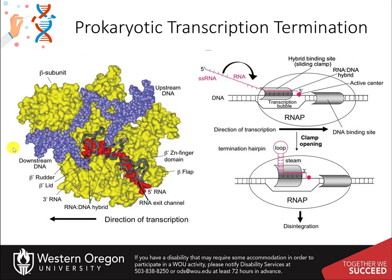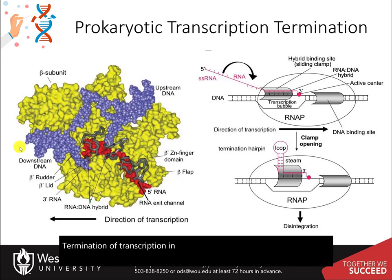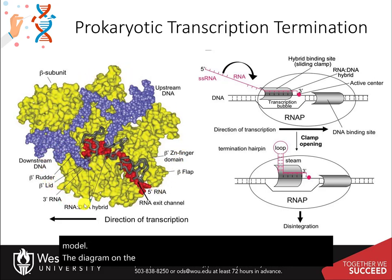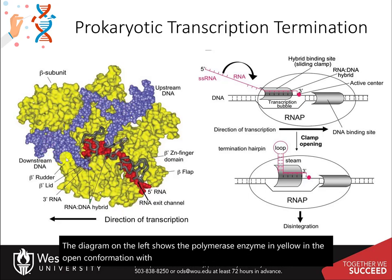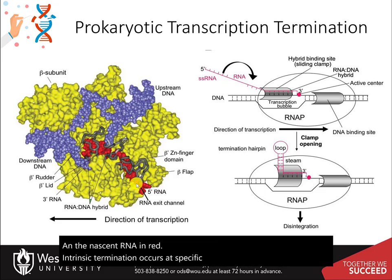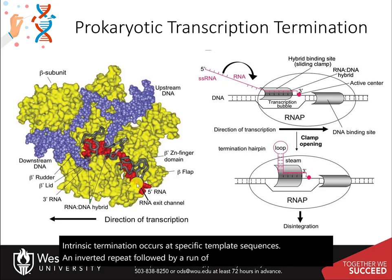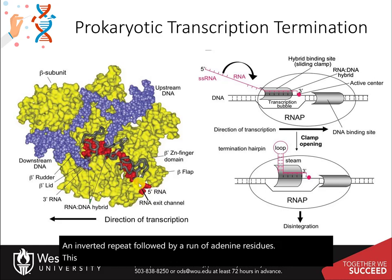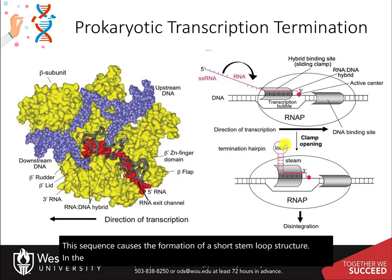Termination of transcription in prokaryotes can occur using an intrinsic model. The diagram on the left shows a polymerase enzyme in yellow in the open conformation with the DNA in blue and the nascent RNA in red. Intrinsic termination occurs at specific template sequences — an inverted repeat followed by a run of adenine residues. This sequence causes the formation of a short stem-loop structure in the nascent RNA chain, which in essence will derail the polymerase from continuing.